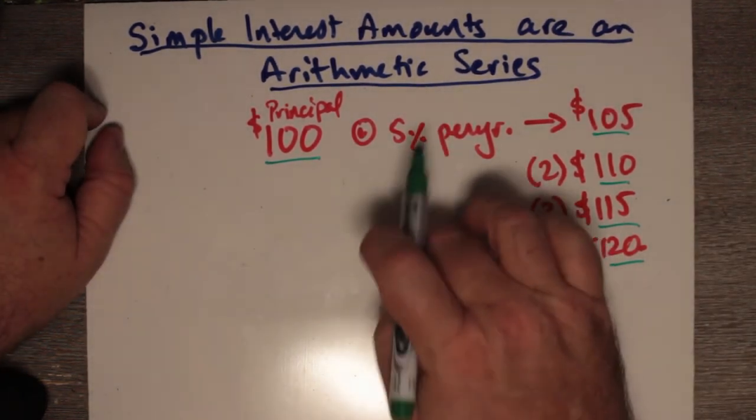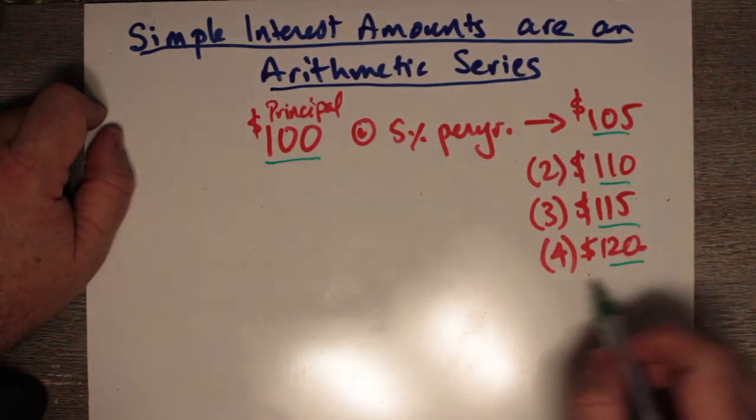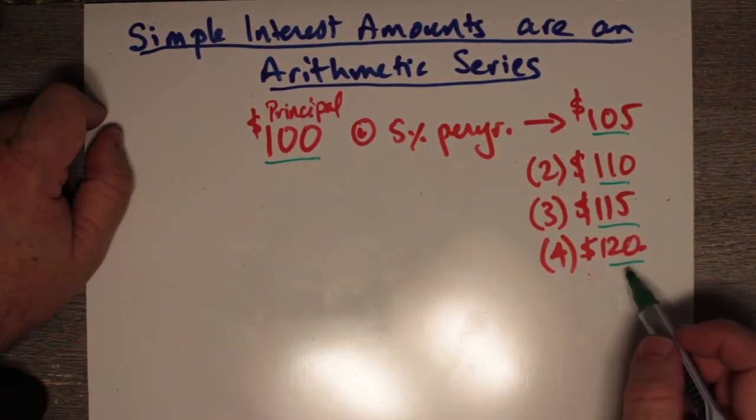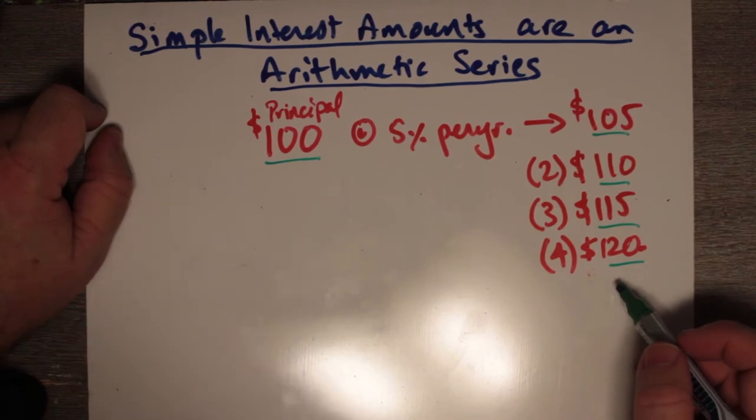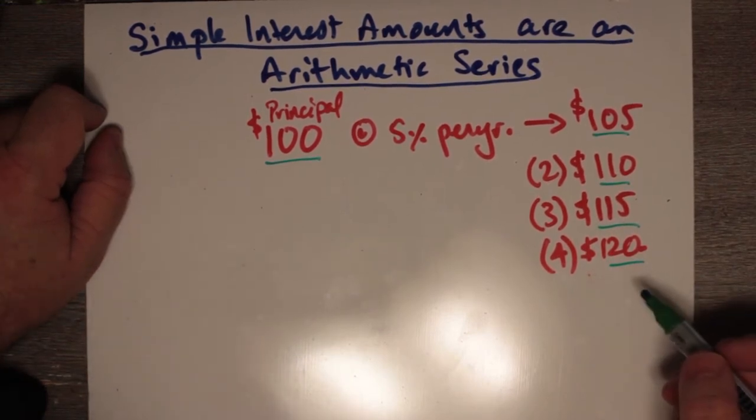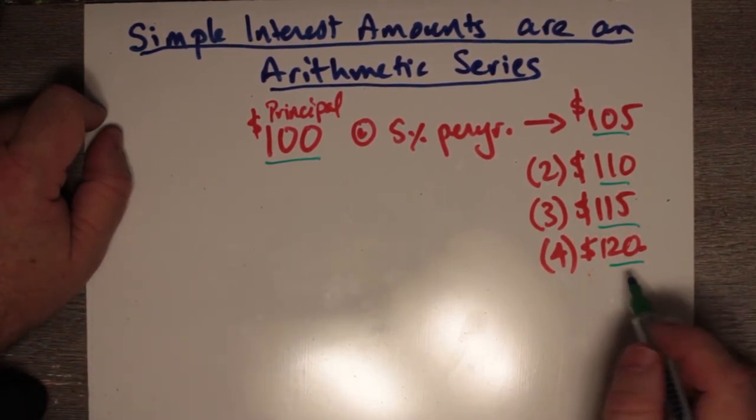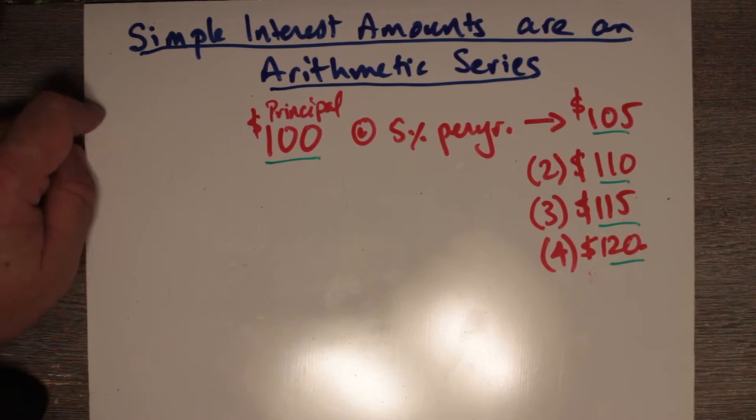So that means that we've been earning, over the period of four years, $20. My investment has gained $20. I still have the $100 in the bank, and the $20 got added to my $100.